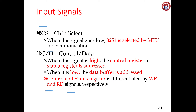The first control signal is Chip Select (CS). Whenever this signal goes low, the 8251 is selected by the microprocessor for communication. The second signal is C/D, where C denotes control and D denotes data. When this signal is high, the control register or status register is addressed. When it is low, data is being sent — so high means control signals and low means data buffer.